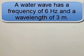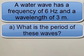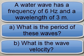Now, let's consider this. A water wave has a frequency of 6 hertz and a wavelength of 3 meters. A, what is the period of these waves? And B, what is the wave velocity?